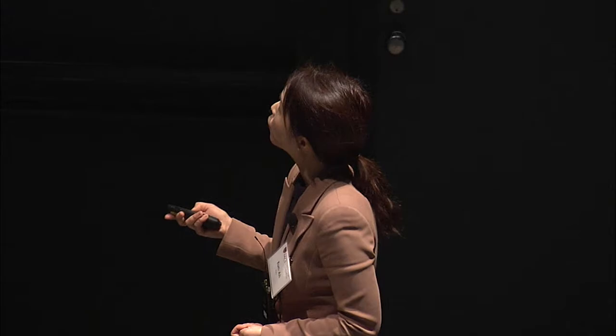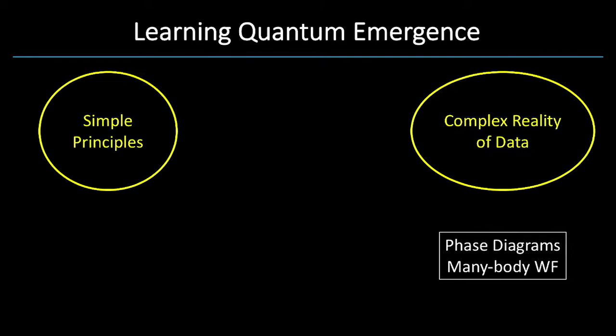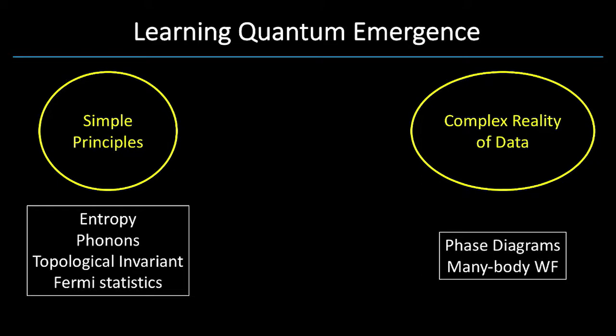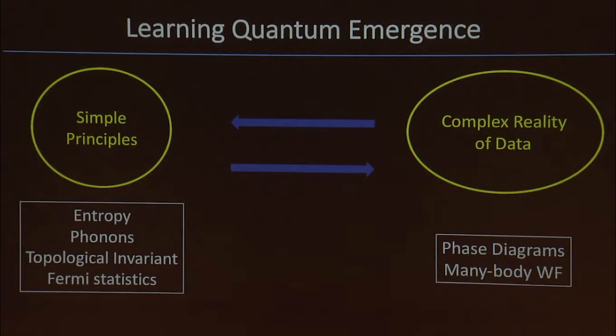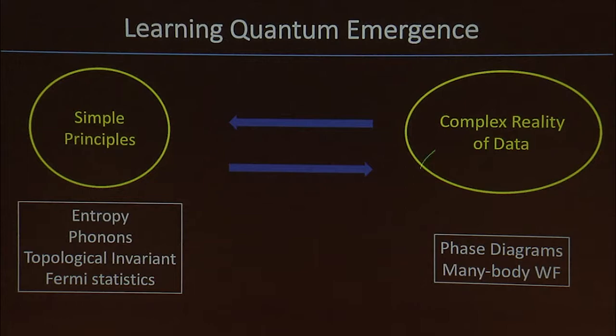So for me, learning quantum emergence means being able to go from complex reality of data, such as phase diagrams and many-body wave functions, to some simple principles. Simple principles that I can carry on and discuss, have conversations about, such as entropy, phonons, topological invariant, Fermi statistics. Entropy and temperature tells us that when you try to lower the temperature, you're going to be driven by energy. Understanding of electron-phonon interaction was critical for our understanding of conventional superconductors. Topological invariants are a great way of simply representing material systems that exhibit topologically non-trivial phenomena. Fermi statistics is the foundational guiding principle for thinking about many-electron wave functions.